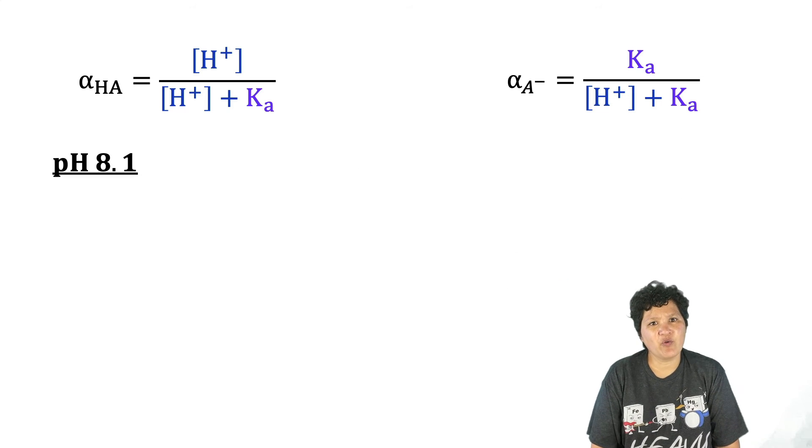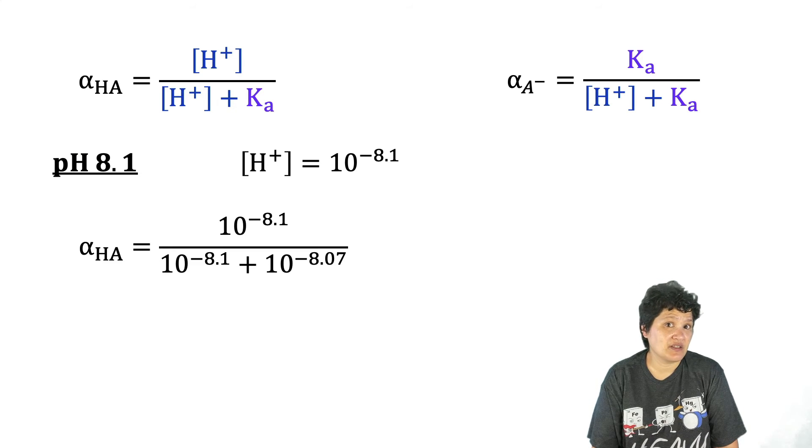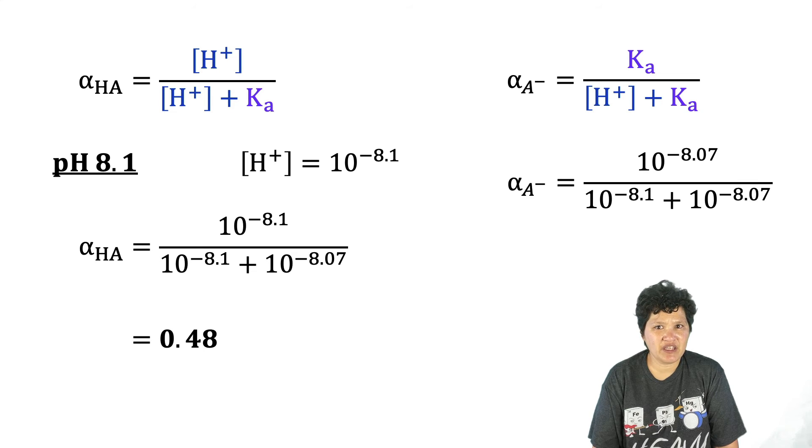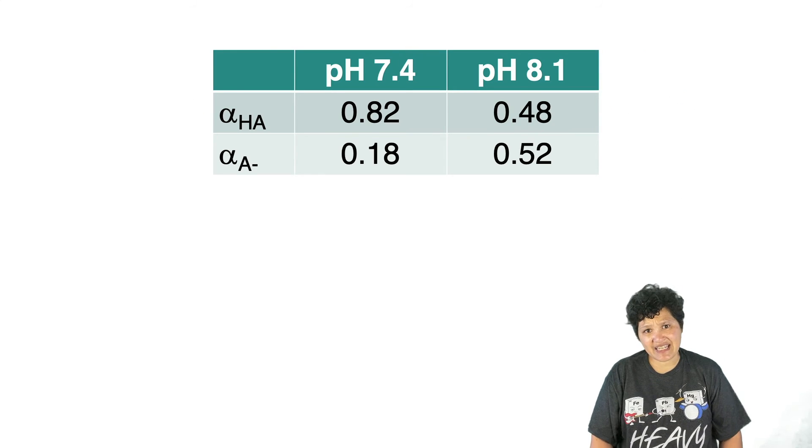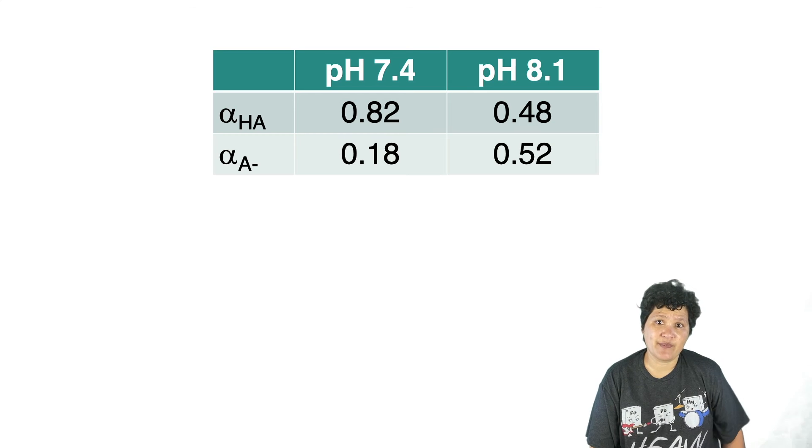At pH 8.1, the H+ concentration is 10 to the minus 8.1. The fractional composition of the acid form of Tris would be 10 to the minus 8.1 divided by 10 to the minus 8.1 plus 10 to the minus 8.07, which gives us a value of 0.48. For the conjugate base form, you could either use the formula or subtract 0.48 from 1. Either tells us that the fractional composition of the base form is 0.52. You could see that by moving to a more basic pH, we end up with more of the base form and less of the acid form.